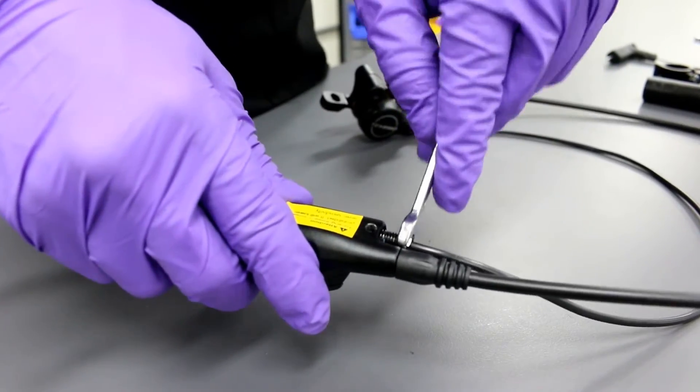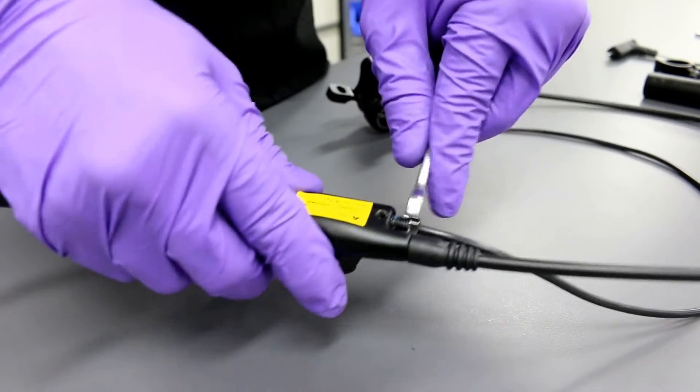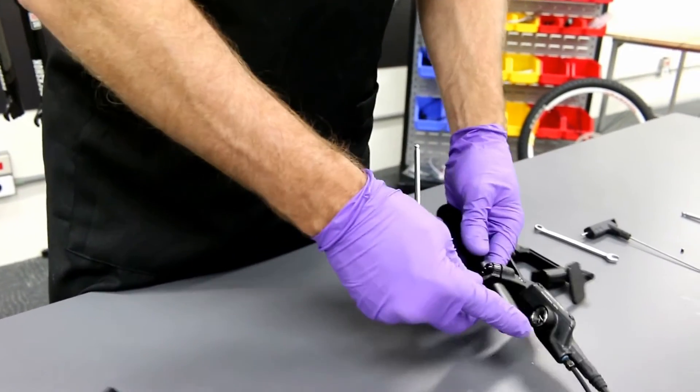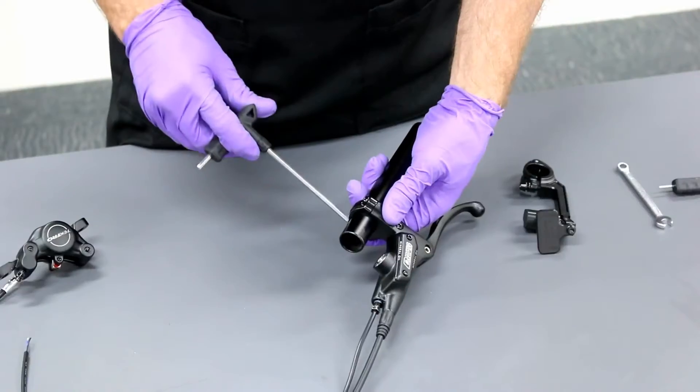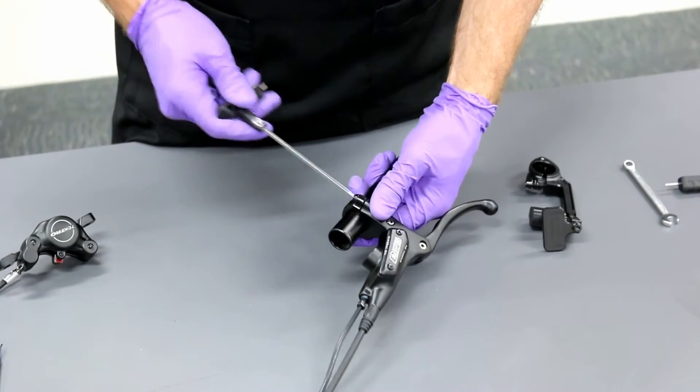And then next what we'll do is we'll set the lever up into our sensor setting tool. With the 4mm Allen, I'm going to slide in the bar and just snug down, lightly tighten the lever onto the bar.